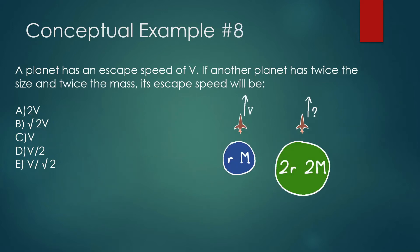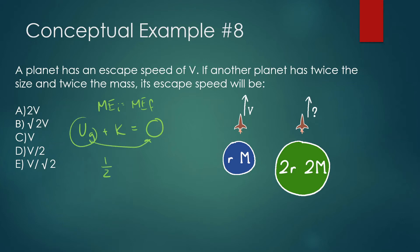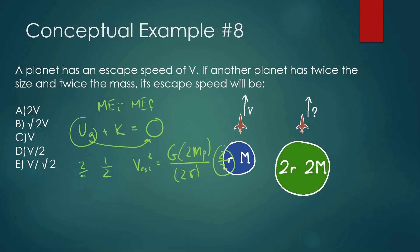Next problem: a planet has escape speed V. If another planet has twice the size and twice the mass, its escape speed will be blank. Using the same energy approach, we get ½·m·v_escape² = G·M_planet / r. The mass of the planet increases by a factor of two, but the radius also increases by a factor of two, so the right side doesn't change at all. That means the velocity stays the same — the answer is C, just the same velocity V.